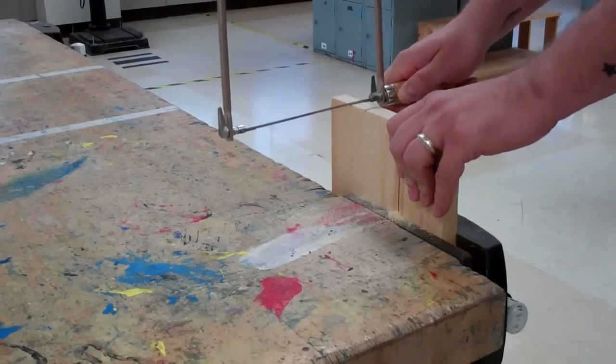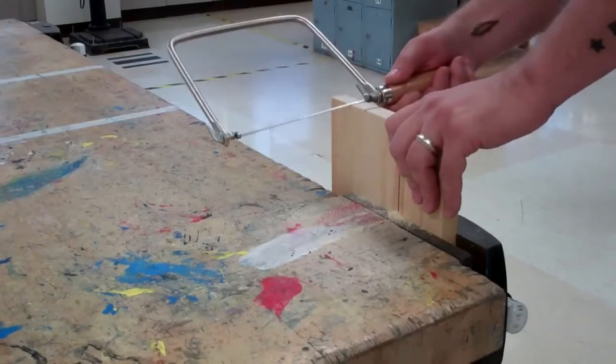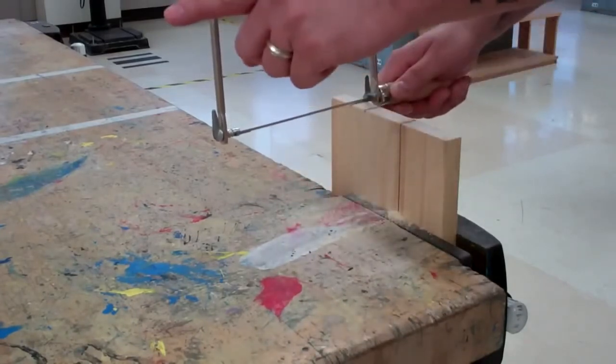You'll notice that as I cut the curve, the only thing that will change is my rotation of the saw to the left or to the right. The blade will always remain parallel to my workspace and pointing directly across from me.